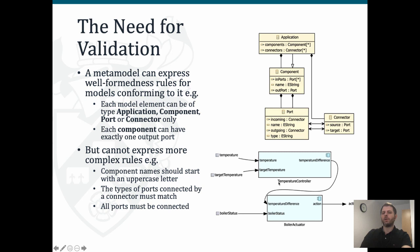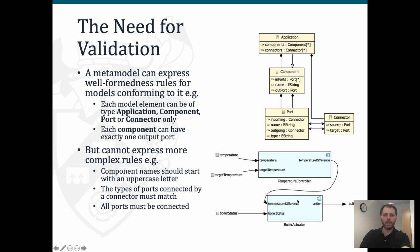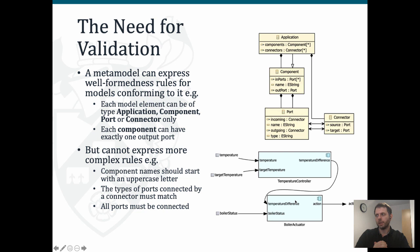For example, in order for our generated code to look good, we might want to enforce that component names should start with an uppercase letter. Or, in a more serious constraint, since connectors represent communication between ports, we might want to enforce that the ports connected by a connector must have the same type - so we don't try to pass a Boolean value to a port that expects an Integer. We might also want to ensure that all ports of all components are connected to something else. This is the sort of constraint that Ecore and meta modeling languages themselves cannot really express.